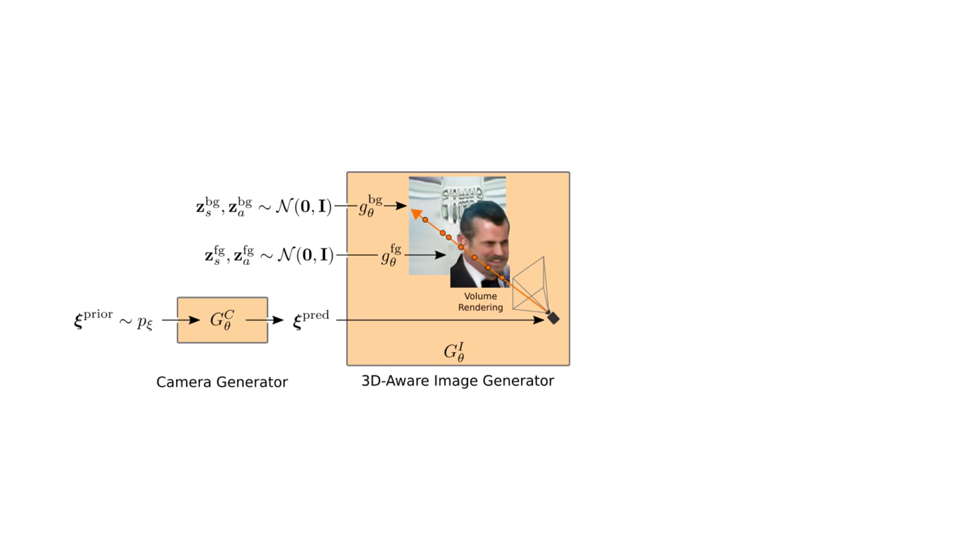We then use classic volume rendering techniques to alpha composite these evaluations, obtaining a final RGB rendering.